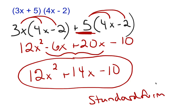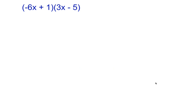For the next two problems, copy them down in your notes and solve them before watching the solutions. The first one is (negative 6x plus 1) times (3x minus 5). Pause the video and do this one on your paper yourself.